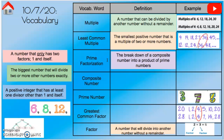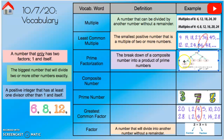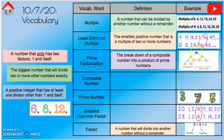Prime factorization is the breakdown of a composite number into a product of prime numbers. When you take a composite number — meaning a number that has more factors than just one and itself — you start with that number and break it down using what we call a factor tree. A factor tree starts with 72 at the top and breaks it down until it gets into prime numbers.